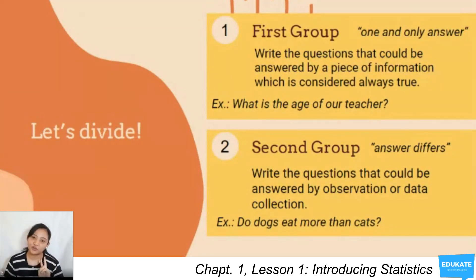For the second group of questions, our answer differs. These are questions that can be answered by observation or data collection. You need to get observations or responses from all those concerned to be able to answer the question. Now try to group your five questions into these two groups.